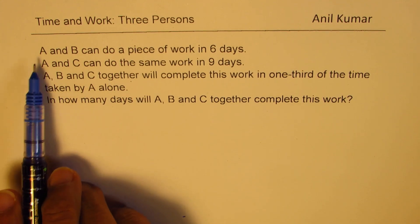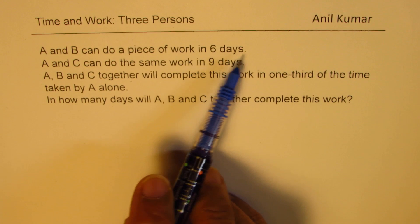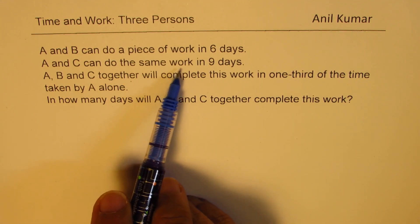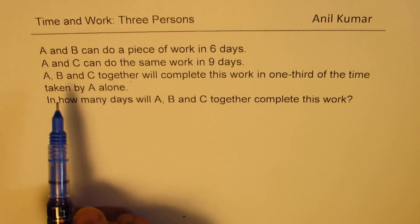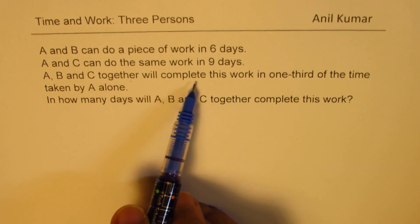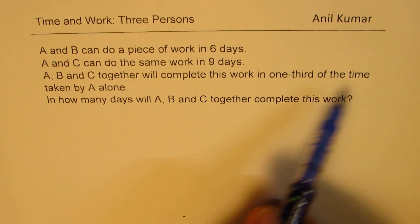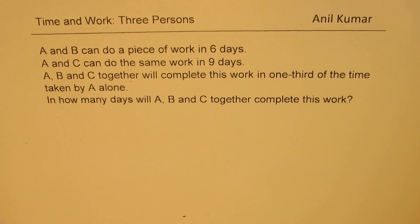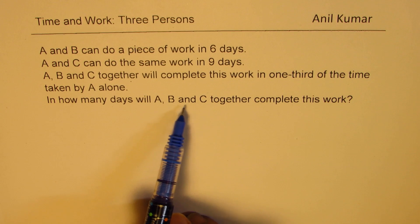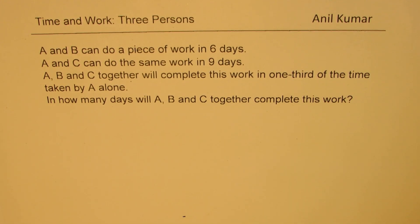It says A and B can do a piece of work in six days. A and C can do the same work in nine days. A, B, and C together can complete this work in one third of the time taken by A alone. In how many days will A, B and C together complete this work? That's the question.